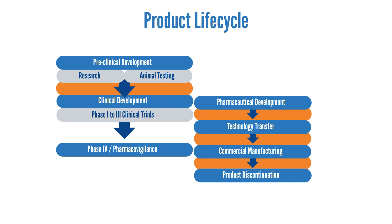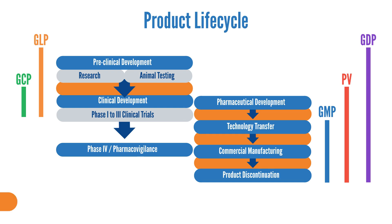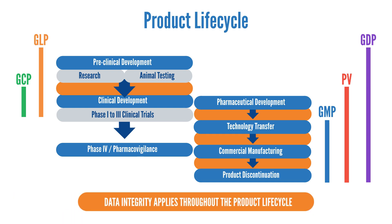It doesn't matter where you work within a pharmaceutical product's life cycle. Throughout that life cycle, different elements of good practice will apply. We know them as good manufacturing practice, good distribution practice, clinical, laboratory, pharmacovigilance. But each of them will apply at different stages within the life cycle, and throughout that life cycle, the rules for data integrity will be applicable and will underpin all of those other good practices.